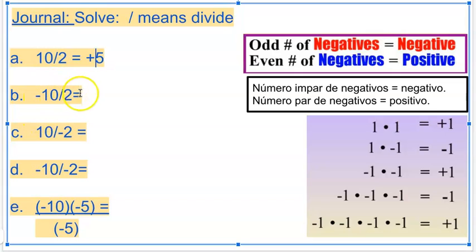Negative 10 divided by 2. Well, 10 divided by 2 is 5. One negative means it's negative.